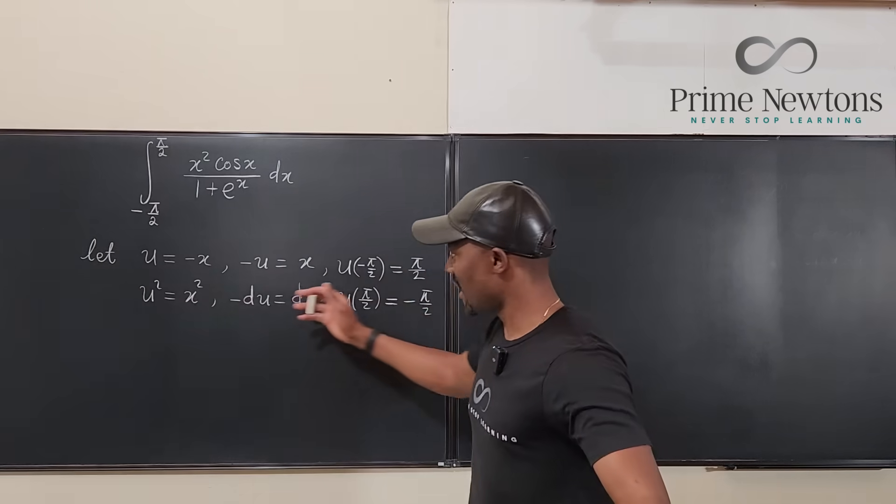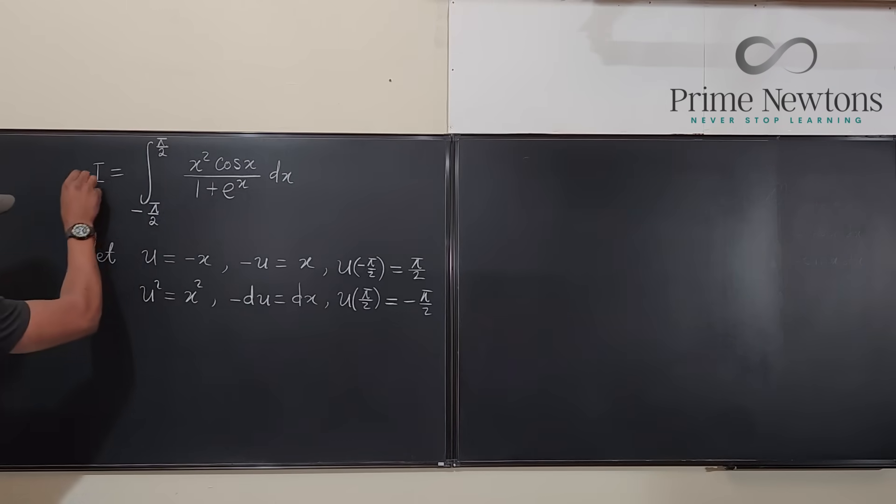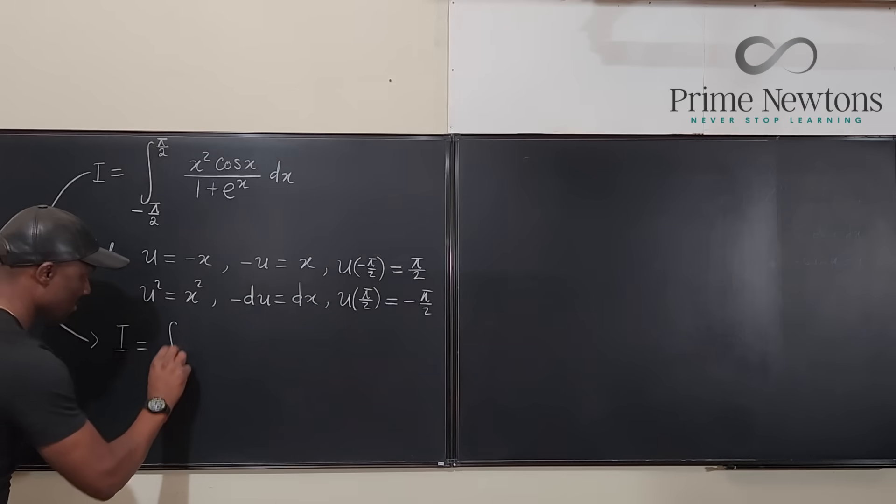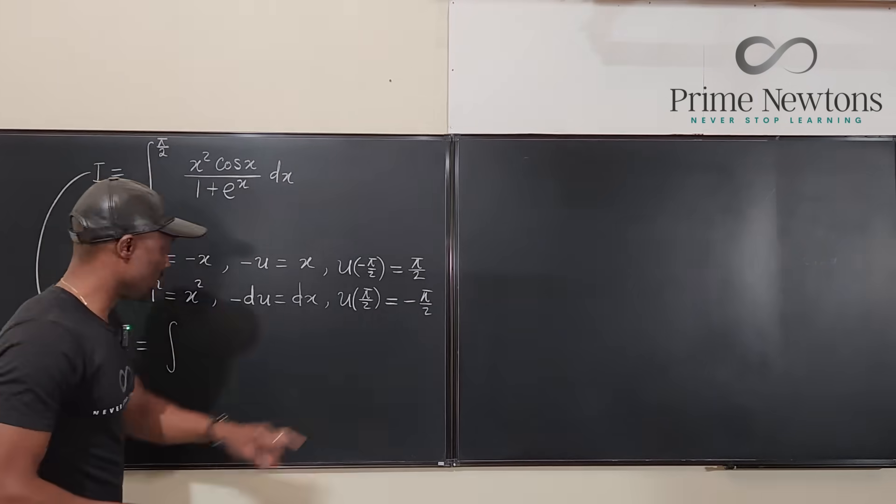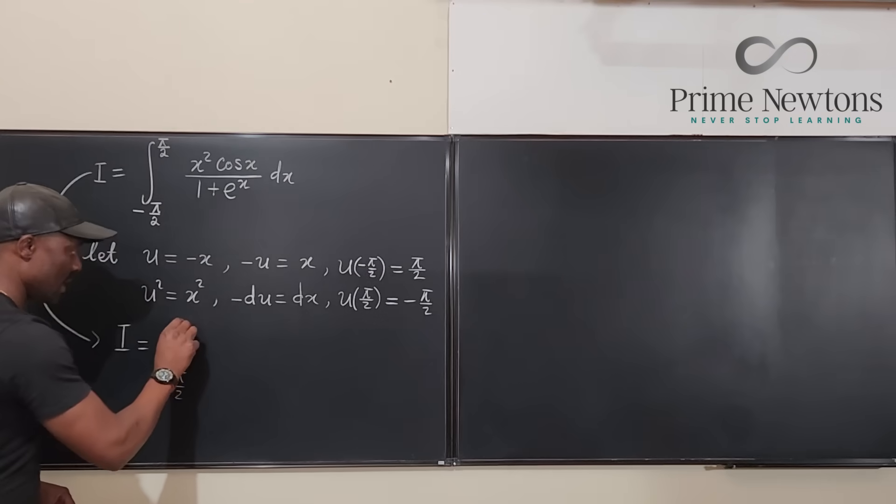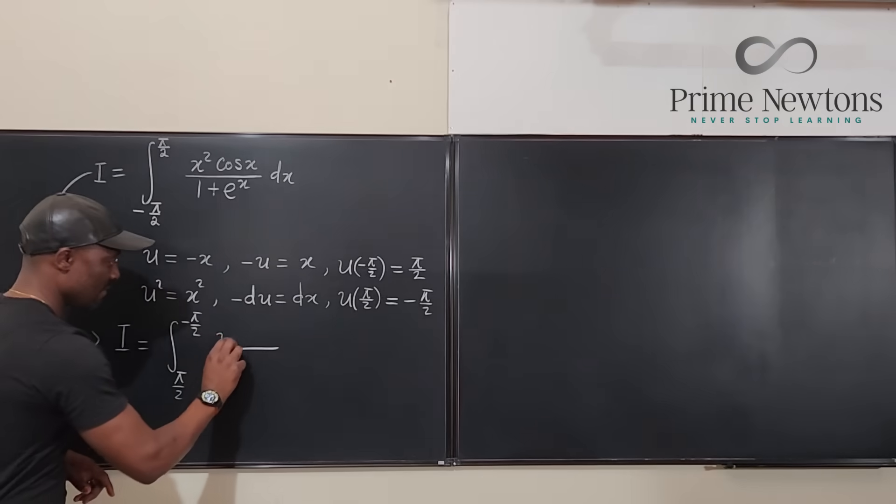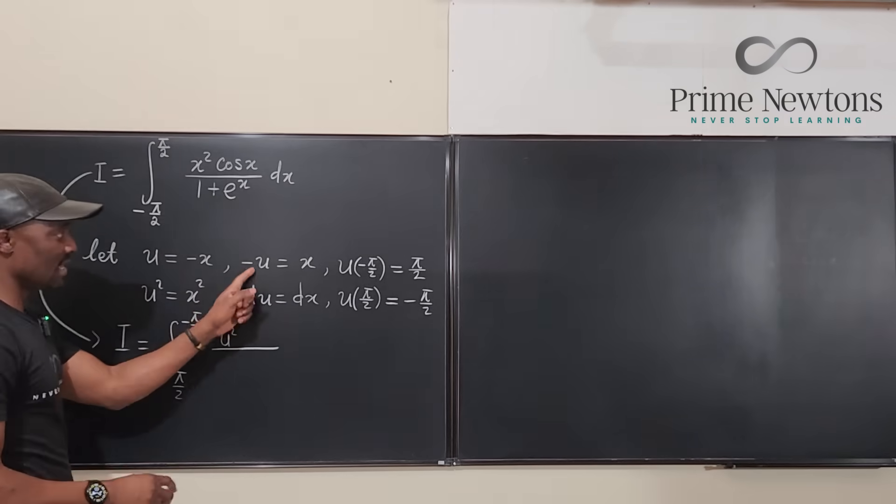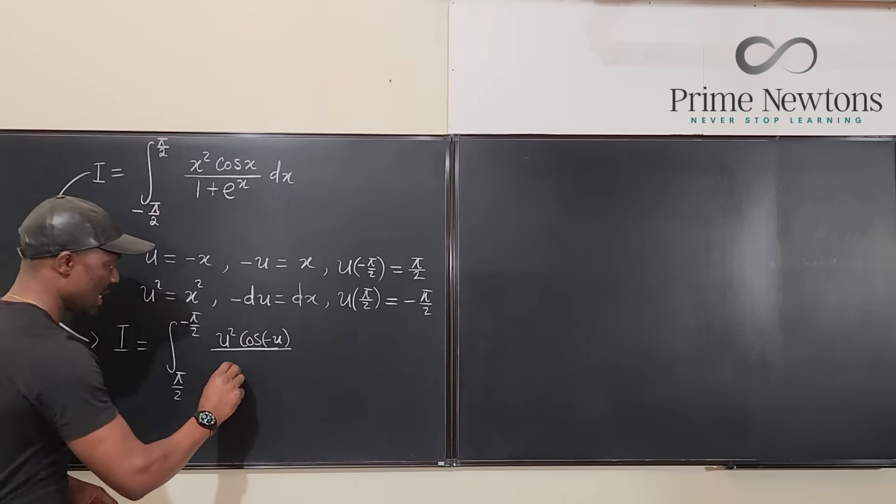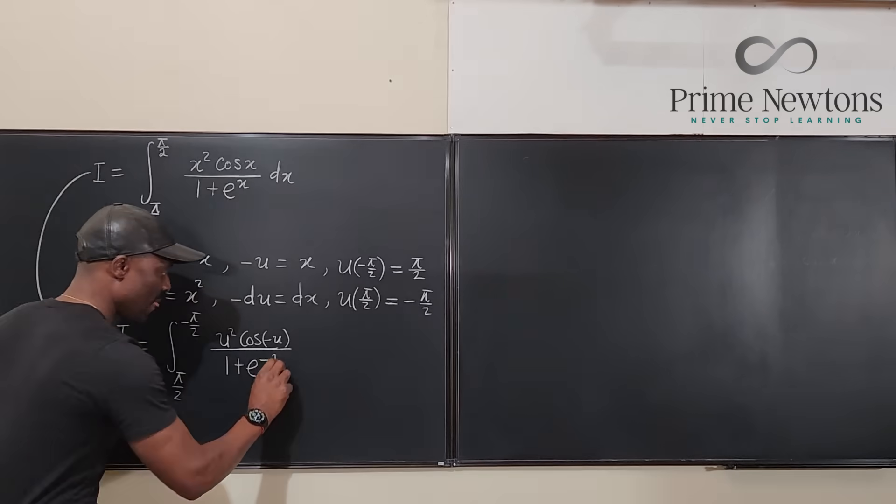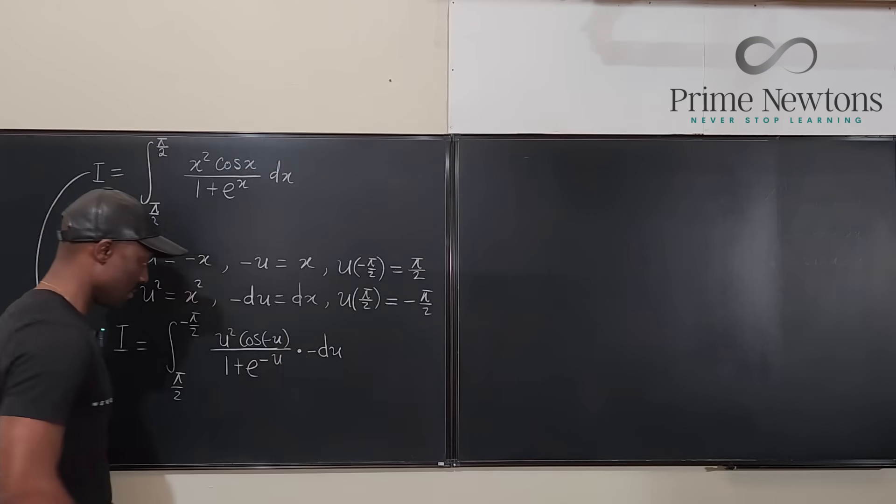So with all of these settled we can go back to this integral and say let's say this guy is I. We can rewrite this I to be I is equal to the integral from instead of us going from negative π/2 to π/2, now we're going to be going from π/2 to negative π/2 because everything is flipped. Now what's going to be the integral? We have x squared will become u squared and cosine x is going to become cosine negative u. And then we're going to have 1 plus e to the x is going to become 1 plus e to the x is negative u. And then what is our dx? dx is going to be negative du.